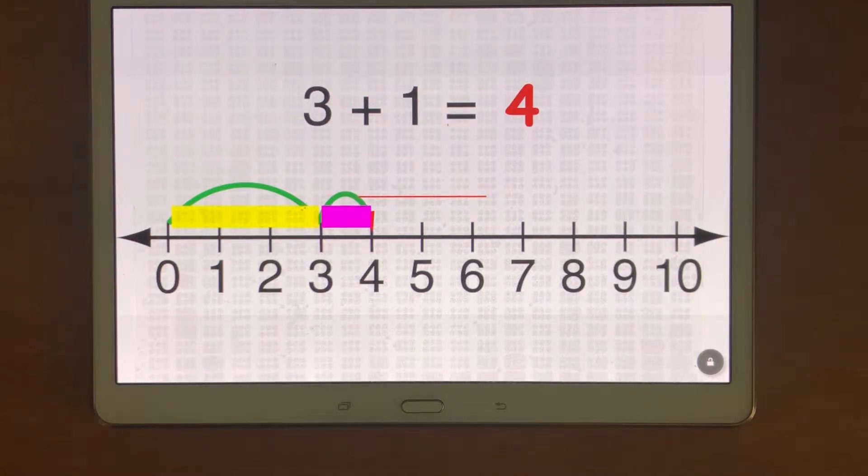This is a video demonstration of a number line equation using the vital software. My equation is three plus one equals four.